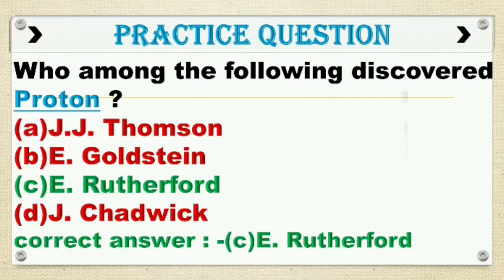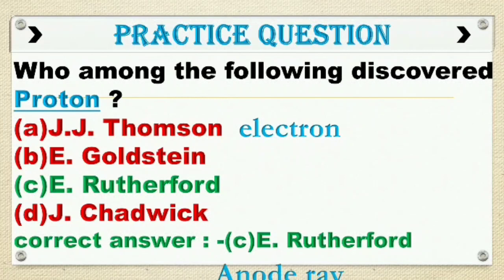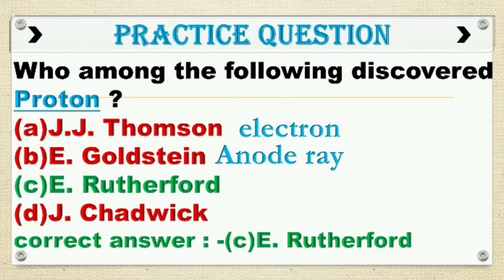The other options are not correct because: A. J.J. Thompson discovered the electron in 1897 by studying cathode rays. B. E. Goldstein discovered the canal rays, positively charged ions, in 1886 by studying anode rays.